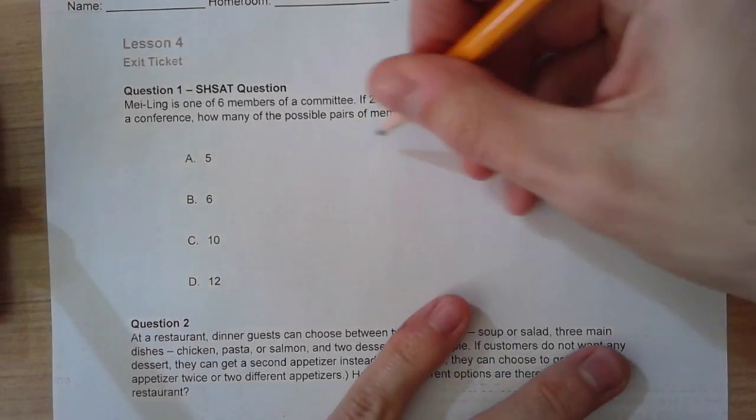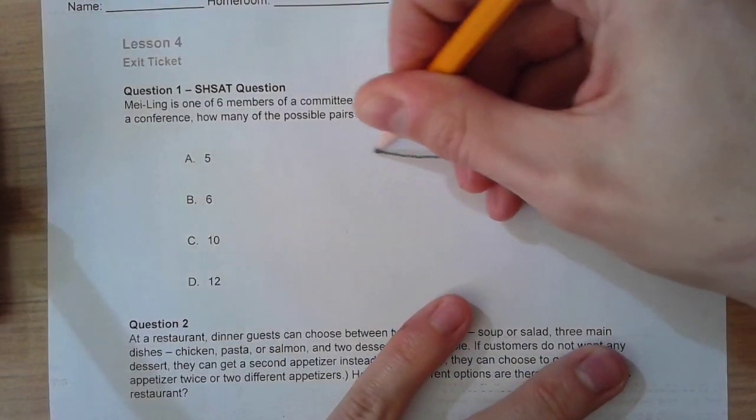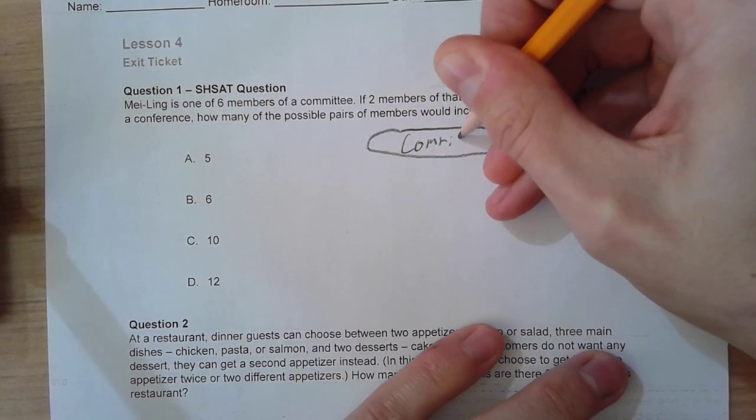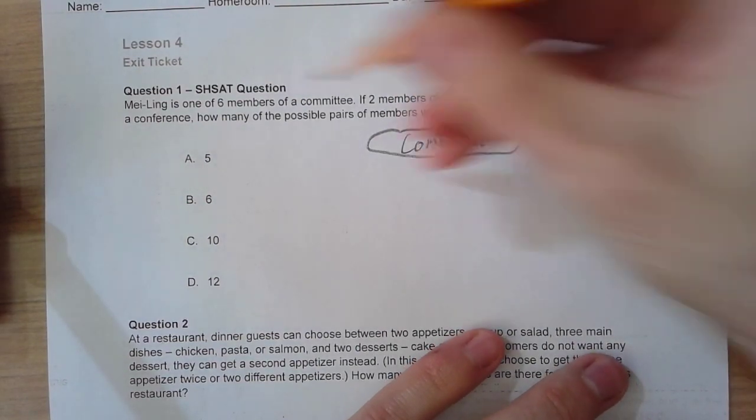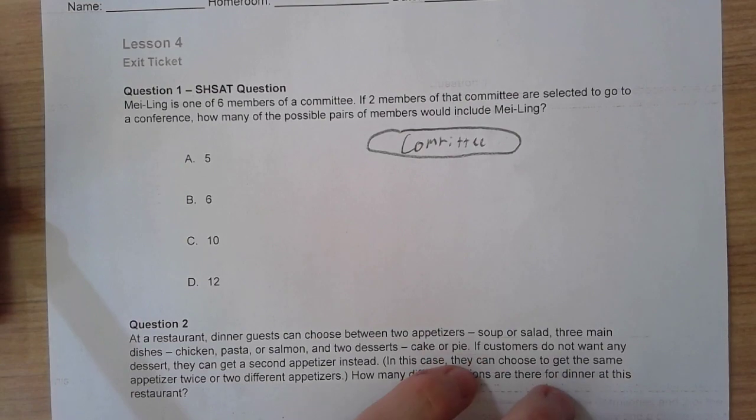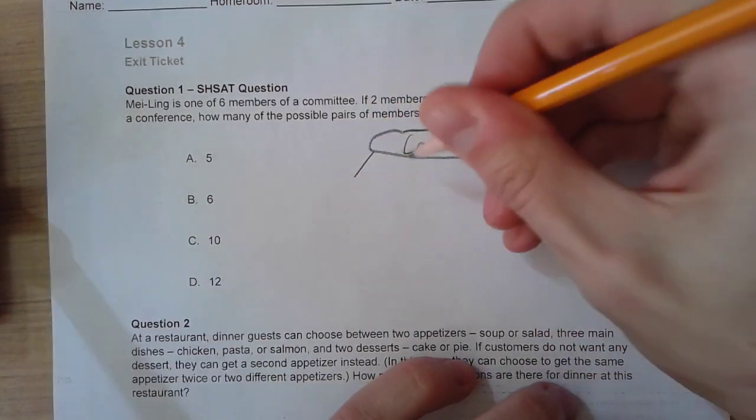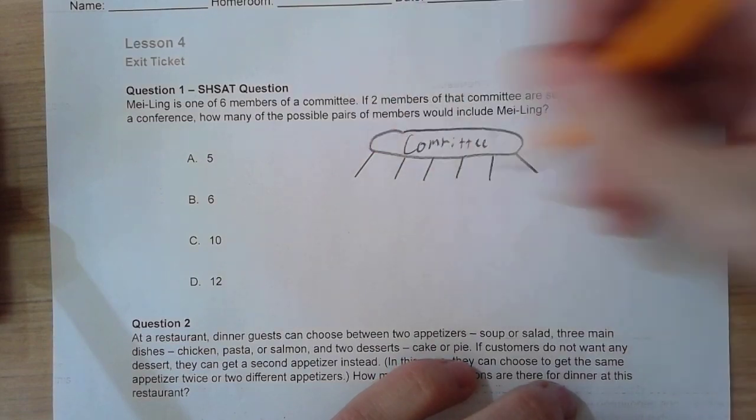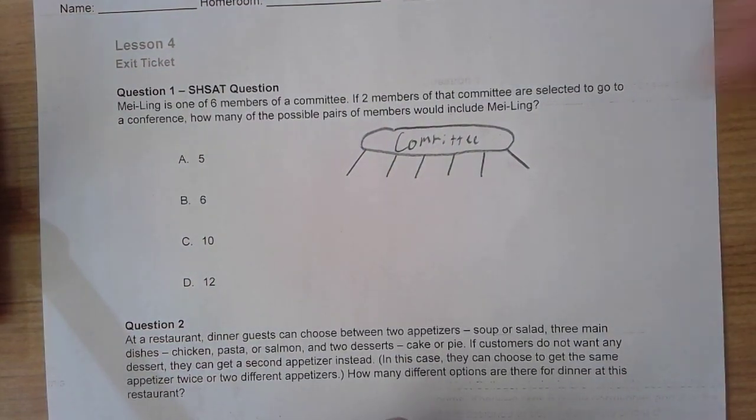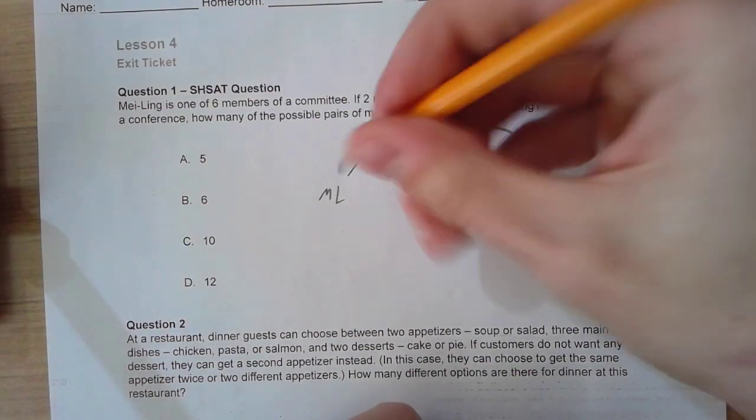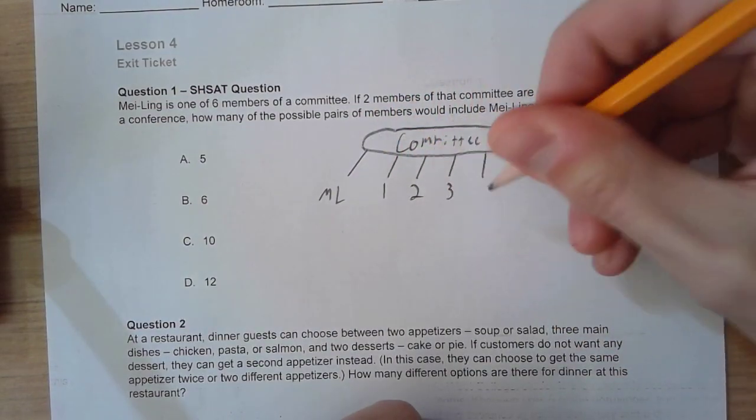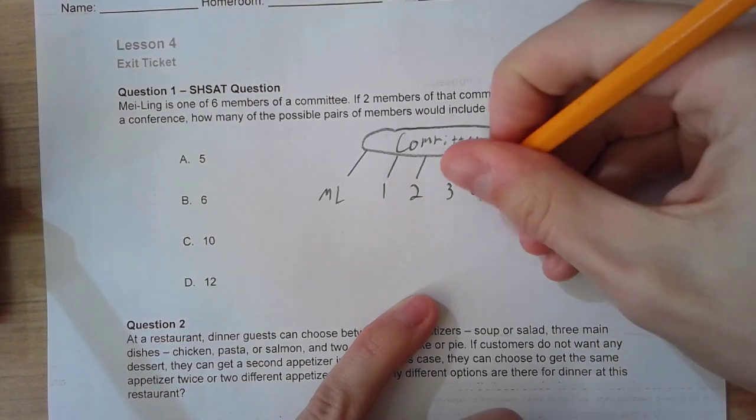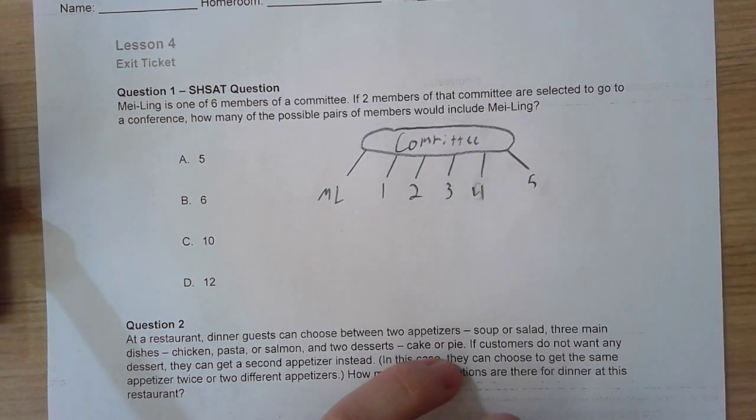Very simple. Should be solved with a tree diagram. Shouldn't waste any time. I'm going to draw my main circle and label this committee. From our selection, we know we are selecting two members, so our first selection is going to have six lines to represent each of the six members. My first line I'm going to write Mei Ling and then a couple of other no-name people on the list. That is not supposed to be a five. That is a four.